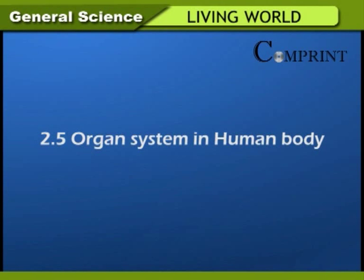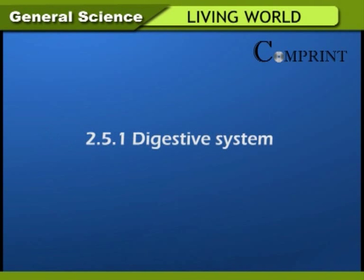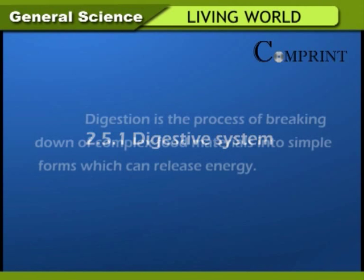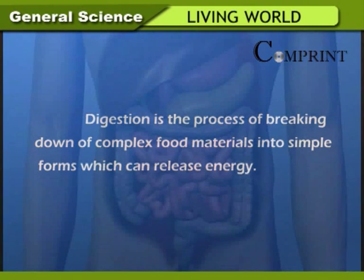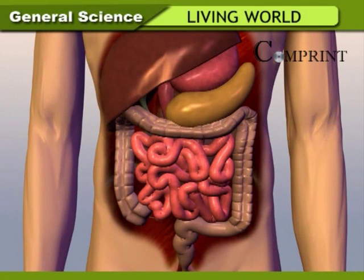Organ systems in the human body. Digestive system. Digestion is the process of breaking down complex food materials into simple forms which can release energy. The digestive system consists of a pipe-like alimentary canal and digestive glands. The alimentary canal takes different shapes in the form of different organs. The important parts of the alimentary canal are given below.